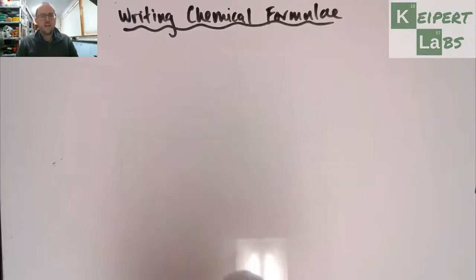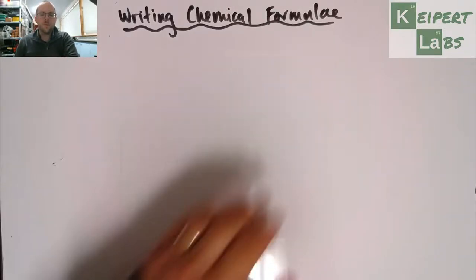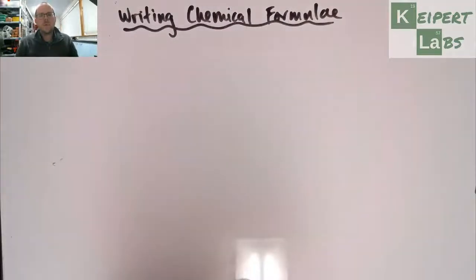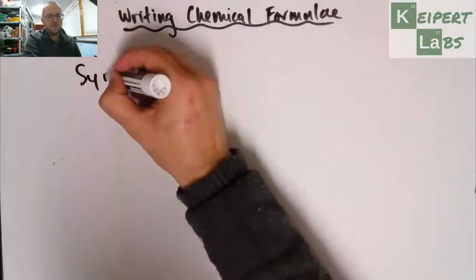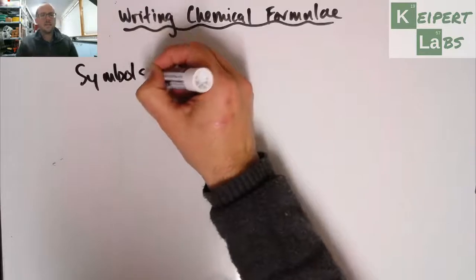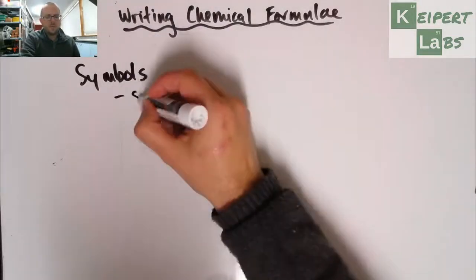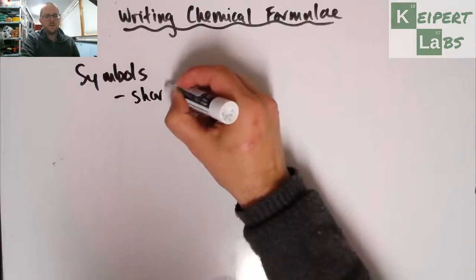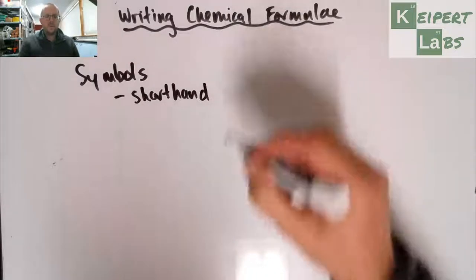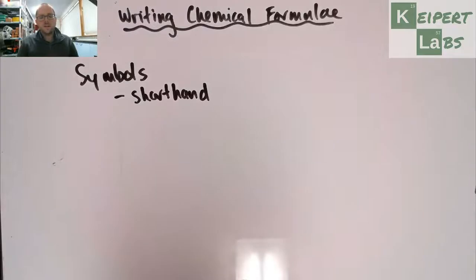And chemical formulae, which is the plural of the word formula, allow us to do that. And so one of the things that we need to remind ourselves about before we can construct a chemical formula is the concept of element symbols. Okay, so remember that there are shorthand. We've looked at this before, you've looked at this several times over the last couple of years, but the idea that they're a shorthand way to represent elements.